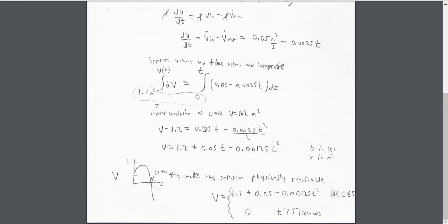Just rearranging that and making it a little bit more simplistic with volume on one side and time on the other, we get that the volume is going to be equal to 1.2 plus 0.05t minus 0.00125t squared. T is in seconds and V is in meters cubed.